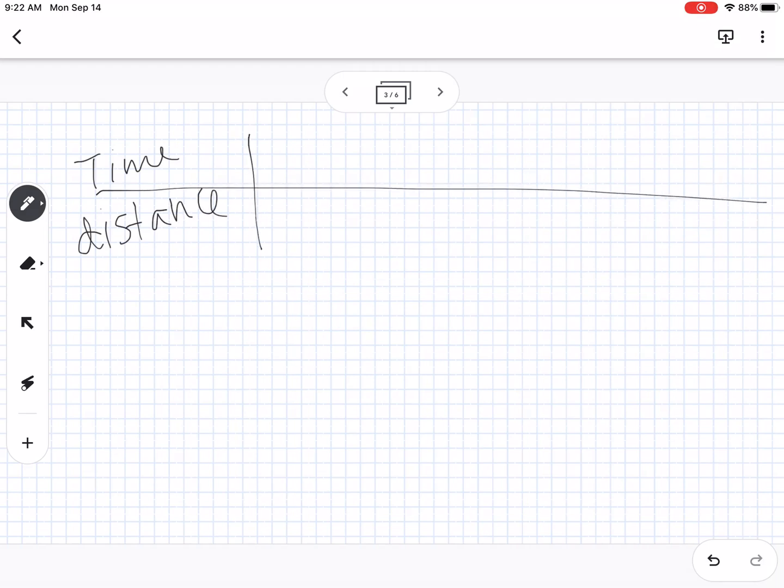So the example that we have in our notes, we have a table where we have time and distance. And so we have 0, 0, 1, 0.75, 2, 3, 3, 6.75, and we'll go to 4, 12. That's enough points to see.